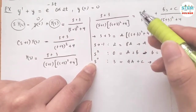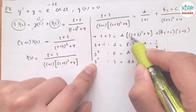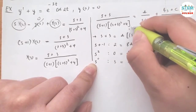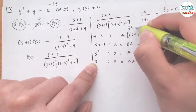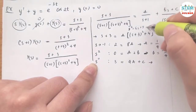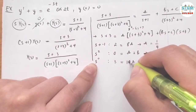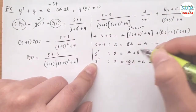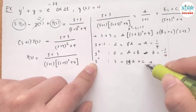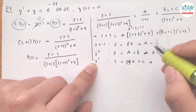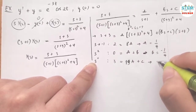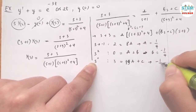Expanding s plus 3 squared gives s squared plus 6s plus 9, and 9 plus 4 equals 13, so the constant term on the right is 13A plus C. With A equal to 1 fourth, 13 times 1 fourth plus C equals 3, giving C equals 3 minus 13 fourths, so C equals negative 1 fourth.